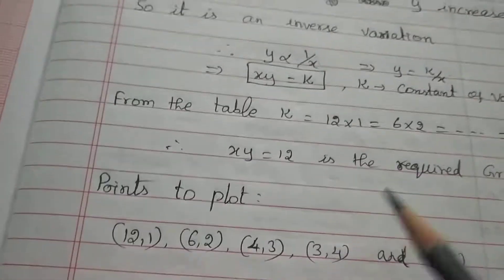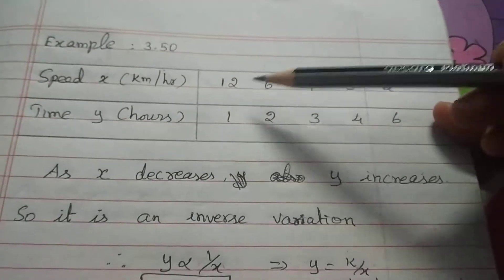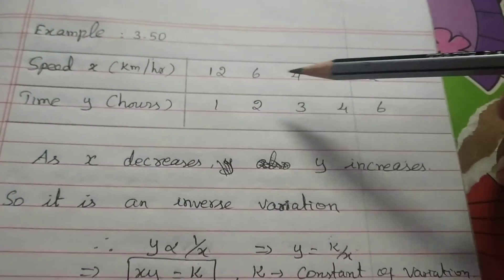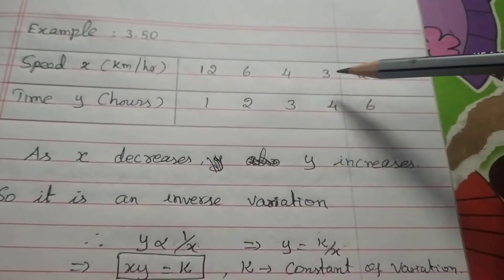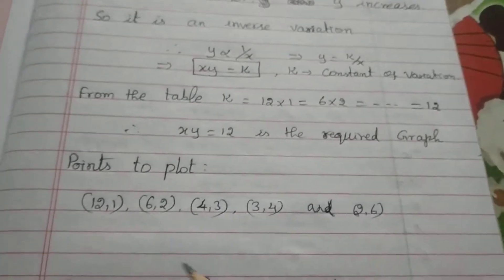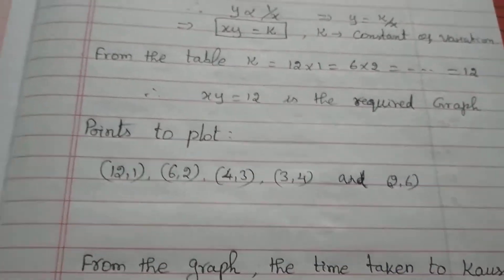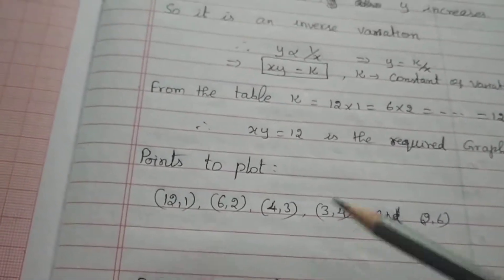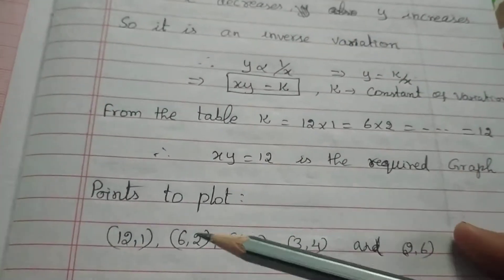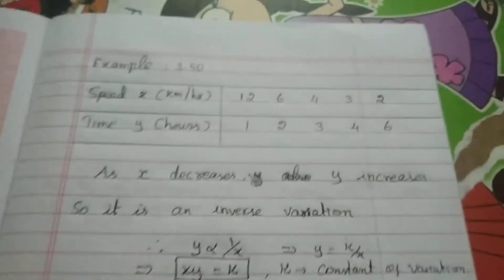Points to plot — let's mark the points. The coordinate pairs are: (12, 1), (6, 2), (4, 3), (3, 4), and (2, 6). Now we will plot these points on the graph.